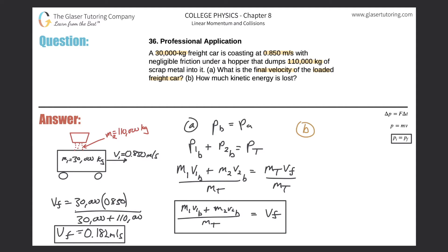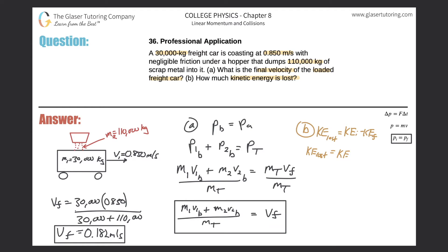That takes care of letter A. Now let's move on to letter B: How much kinetic energy is lost? The kinetic energy lost equals the initial kinetic energy minus the final kinetic energy. Initially there are two pieces, so: kinetic energy of the freight car plus the kinetic energy of the scrap metal, minus the final kinetic energy of the combined system after the scrap metal is dumped into the car.